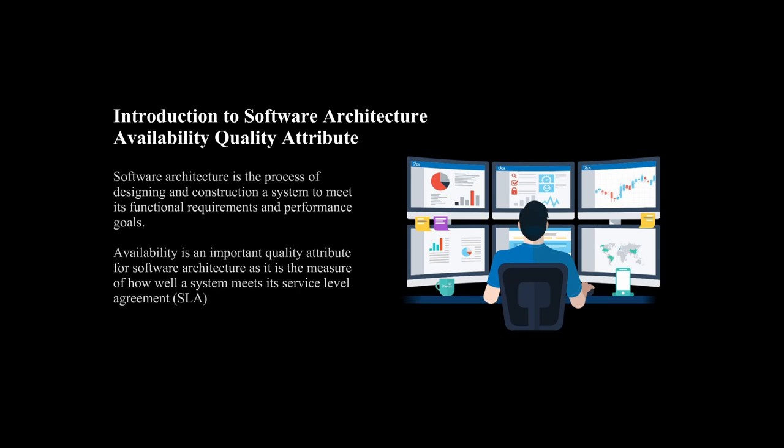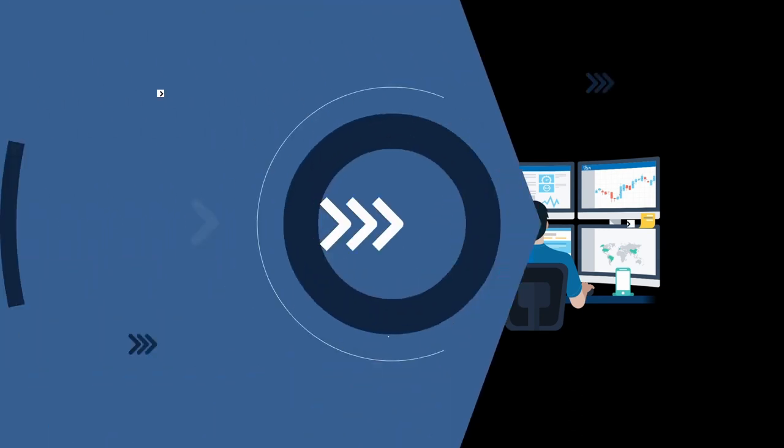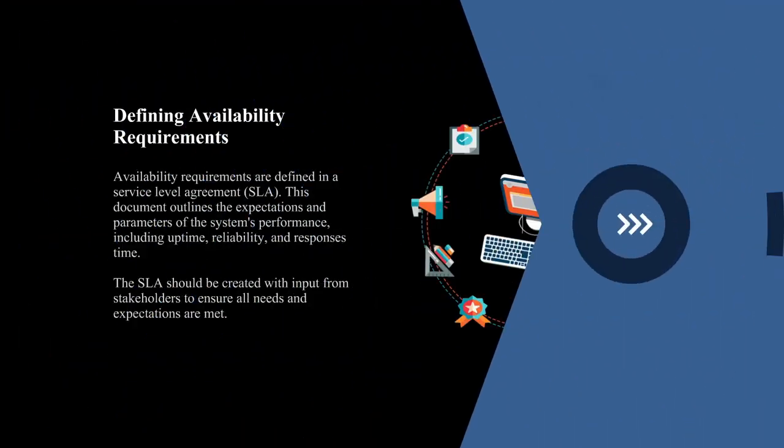There are many things that can make a software system inaccessible, such as hardware and software problems, network problems, power outages, and natural disasters.